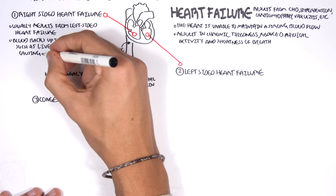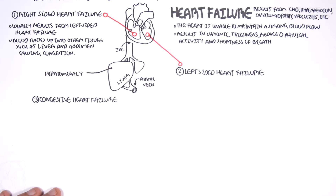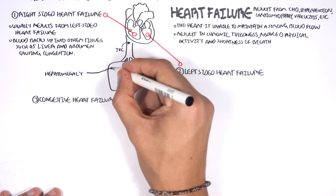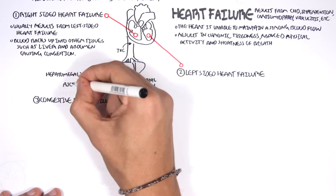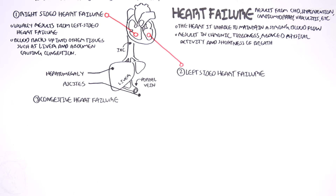As a result of right-sided heart failure, we can have hepatomegaly and ascites, because of the backflow from the right ventricle and right atrium, because the right side of the heart fails to pump blood in the right direction.